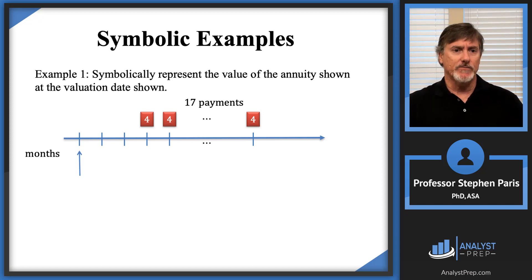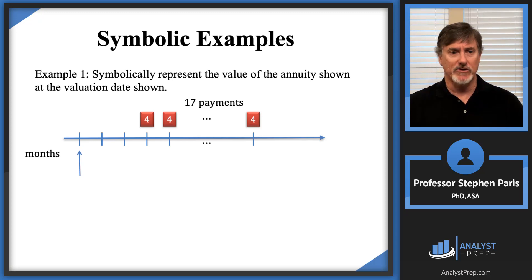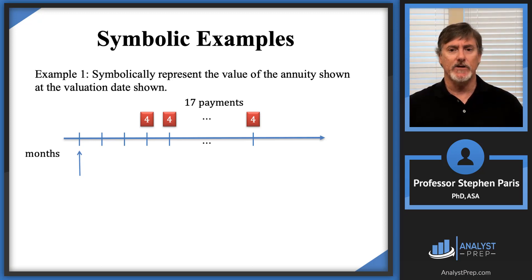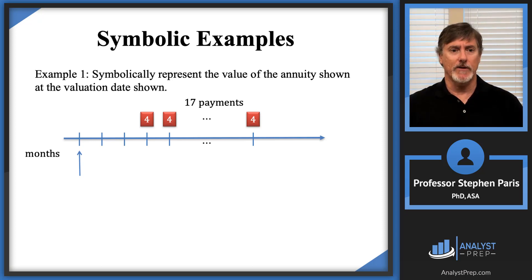For this particular annuity, we've got 17 payments. The payments are four. They're monthly payments, and the valuation date is three months before the first payment.